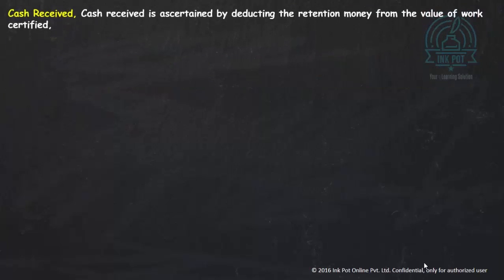Cash received is the value of work certified minus the retention money. For example, if the architect has certified work worth 50,000 but retains 10,000, then 40,000 is paid to the contractor — that is the cash received by the contractor.